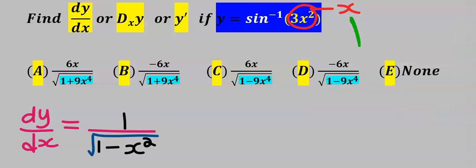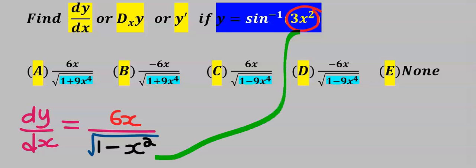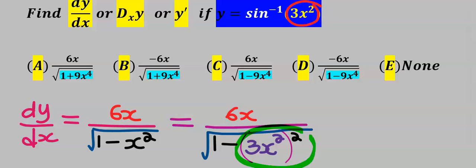Next, instead of differentiating x, we differentiate 3x squared. When you differentiate 3x squared you get 6x. Next, we return 3x squared to the position of x in the formula.